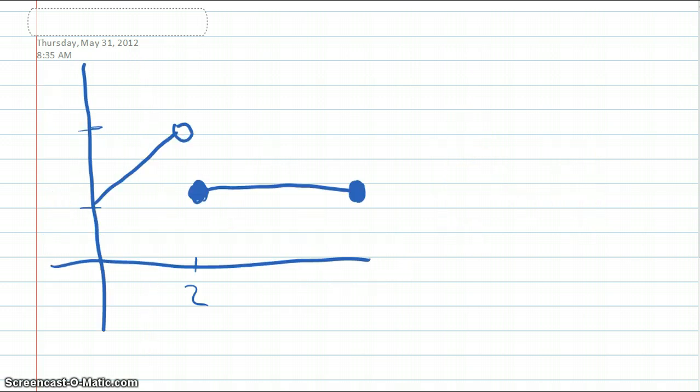Okay, so this is the graph of f, and it asks if these three things exist. The limit as x approaches 2 from the negative side.